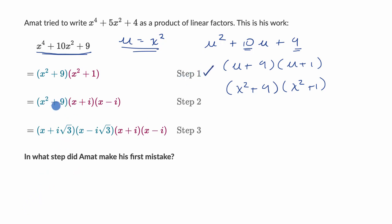All right, now let's think about what Amat did in step 2. They didn't do anything to x squared plus 9, but it looks like they tried to further factor x squared plus 1. And this does seem right. We just have to remind ourselves, just as you have a difference of squares if you're dealing with non-complex numbers, so we could rewrite this right over here as x plus a times x minus a.